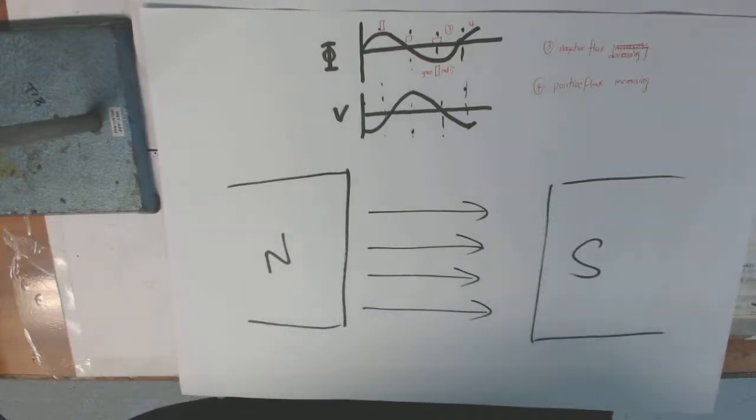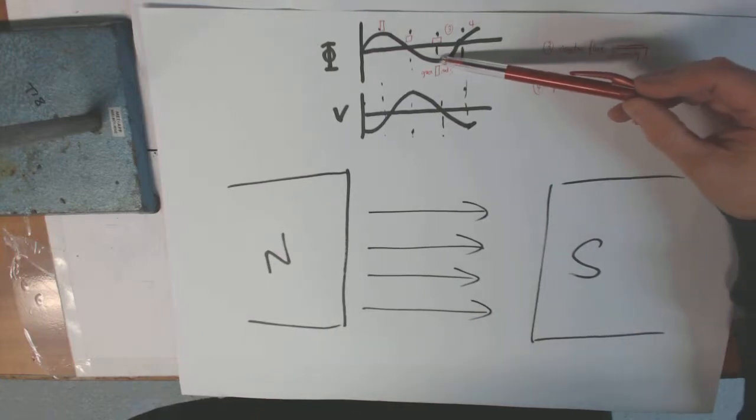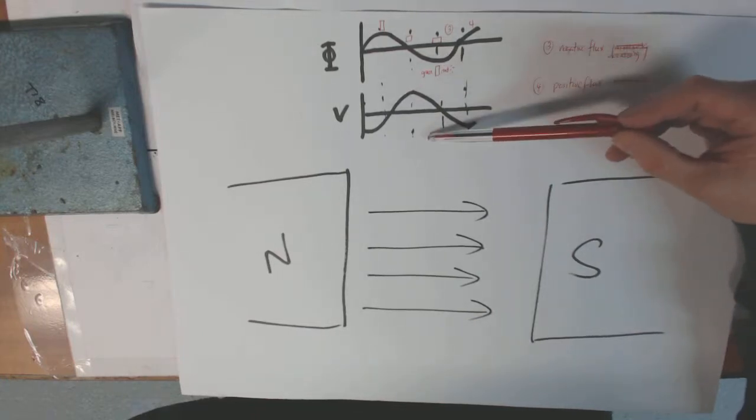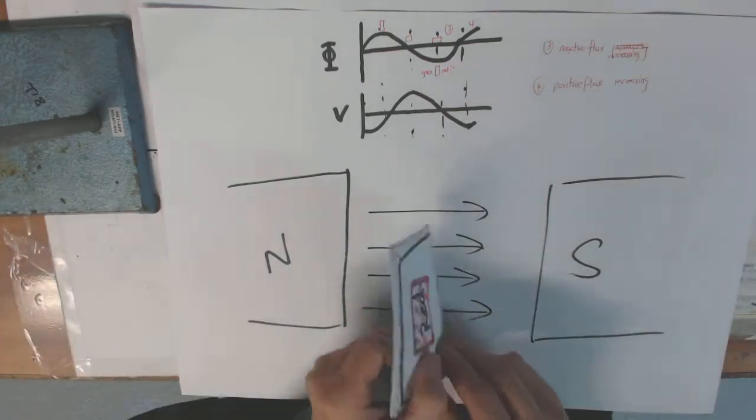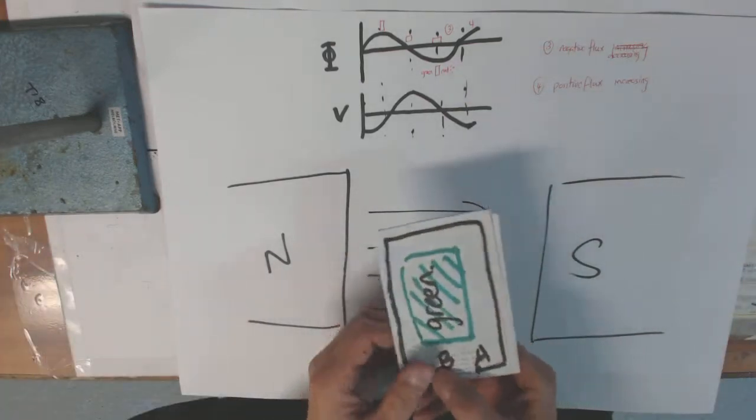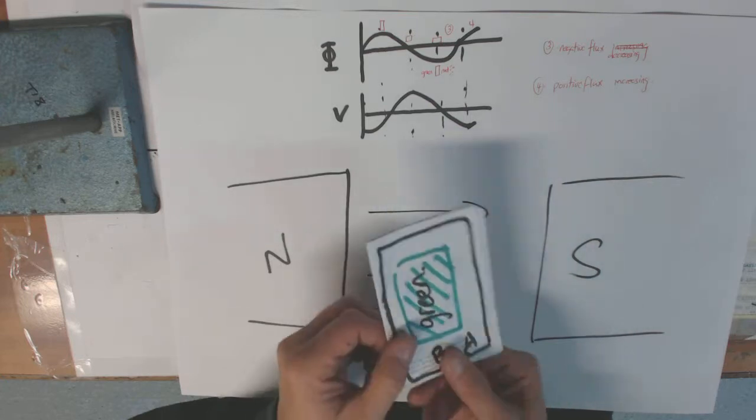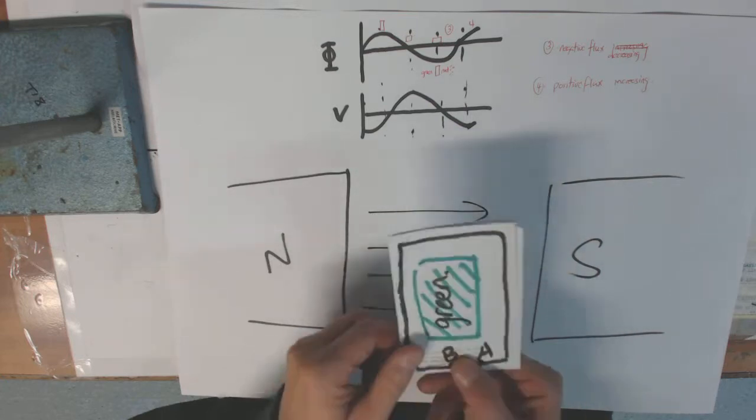All right, what I'm going to try and explain here is when we've got this graph of flux and the graph of voltage